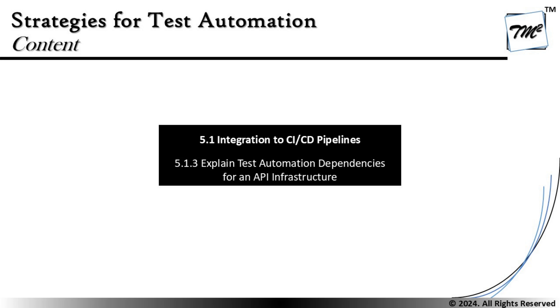Finally, covering the last topic of this section, that is 5.1.3: explain the test automation dependencies for an API infrastructure. As part of this particular topic, we'll be discussing more about what it takes for test automation to interact via API.